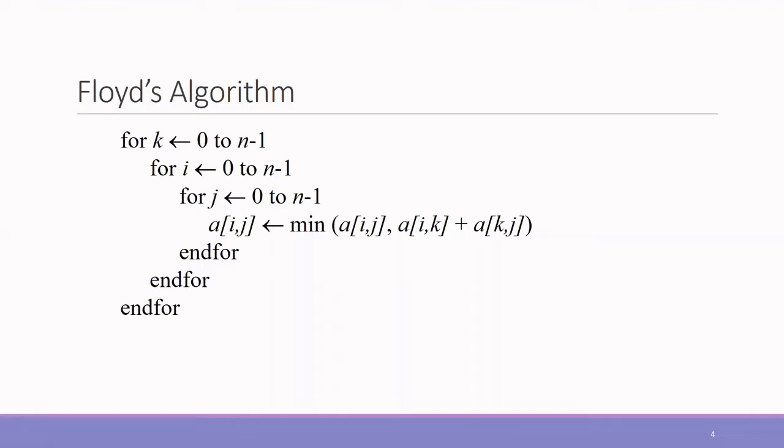One is if there is a value existing in that cell, another path where you traverse along another city, A[i,k] and from K to J. So whichever is the minimum will be updated here in this cell.